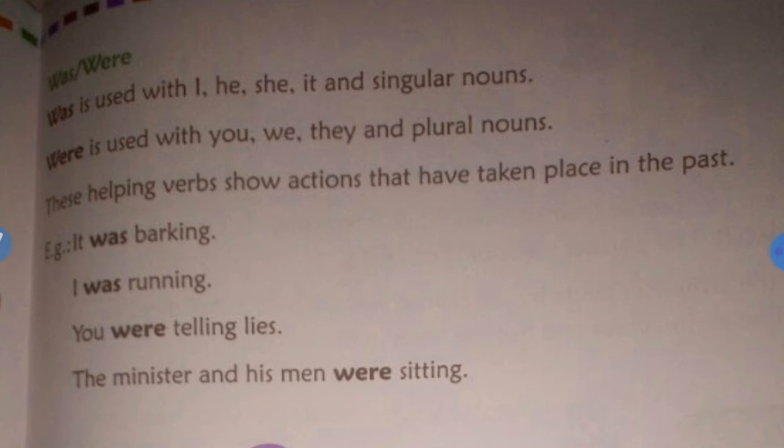These helping words 'was' and 'were' show that the verb — the action — happened in the past. For example: 'It was barking' — it was barking before, not now. 'I was running.' 'You were telling lies.' 'The minister and his men were sitting.' Since 'men' is plural, we use 'were'. If it were singular, we would use 'was'.